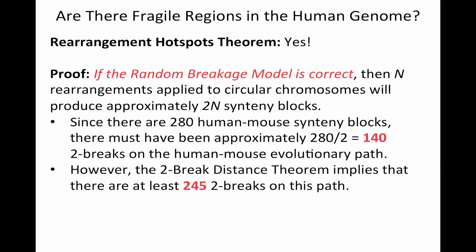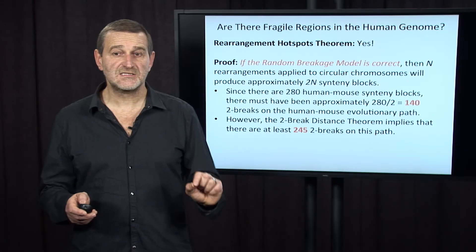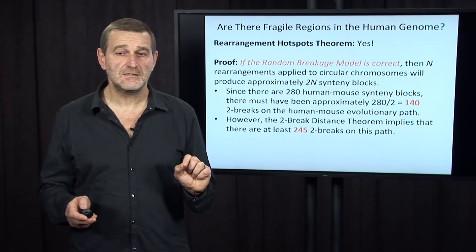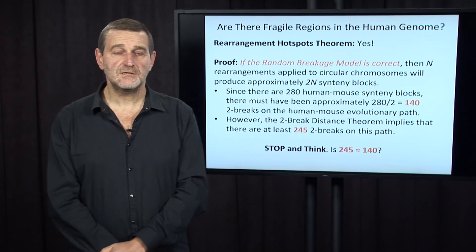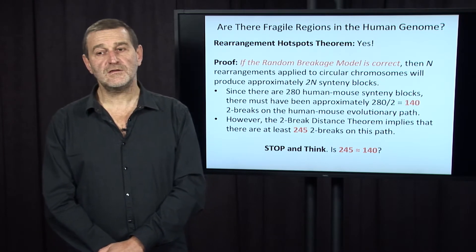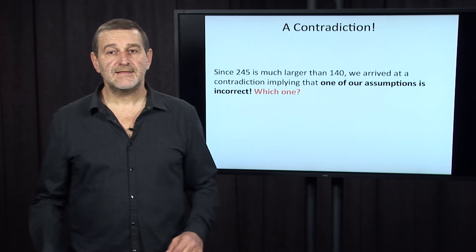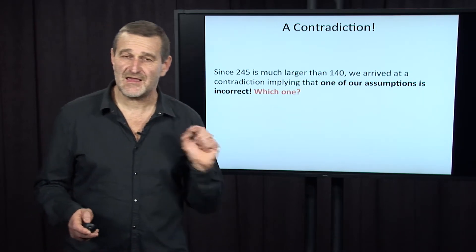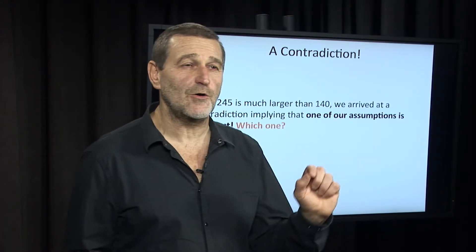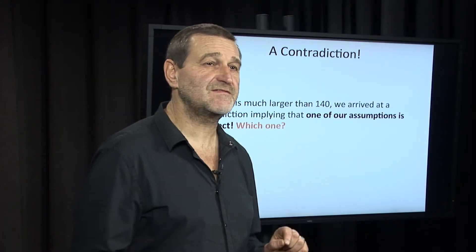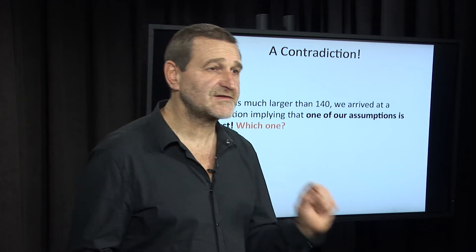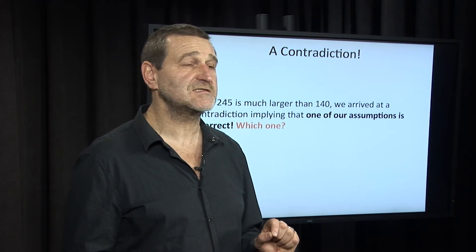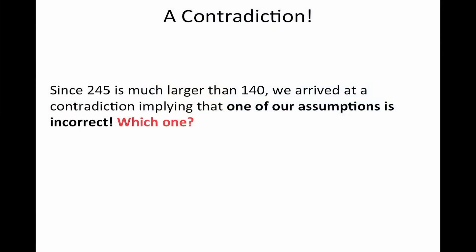But we have just learned from the two-break distance theorem that there are at least 245 two-breaks on this path. My next question: is 245 equal to 140? It turns out that 245 is much larger than 140, even if you apply rigorous statistics allowing for some differences between these two numbers. Which means that we arrive at a contradiction, implying that one of our assumptions in the course of proving this theorem is incorrect.